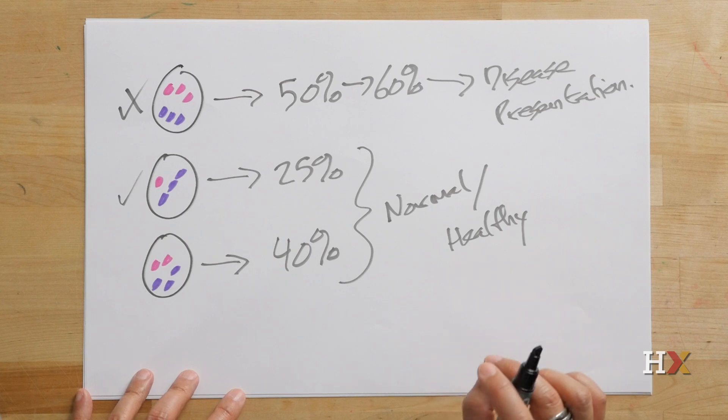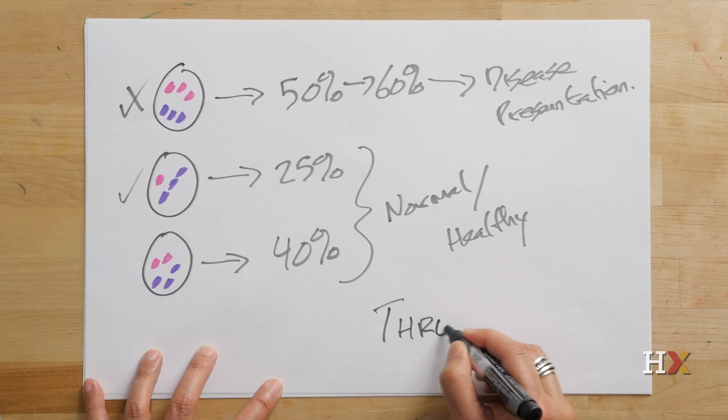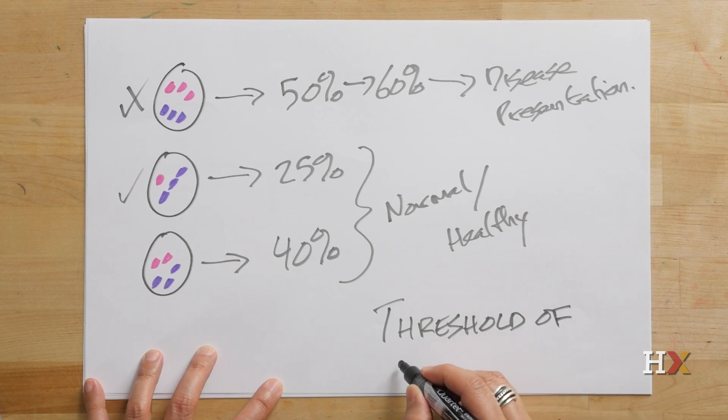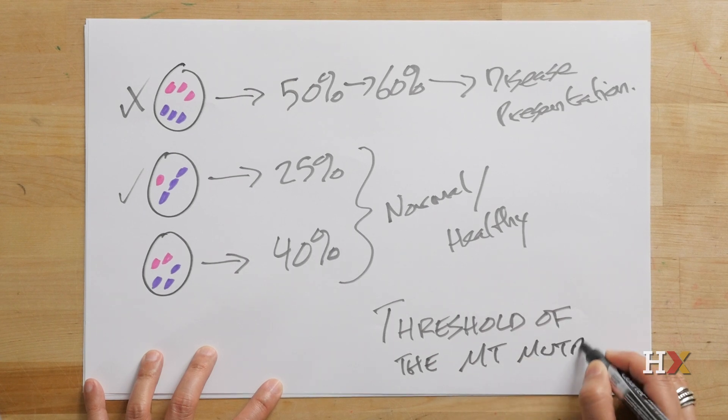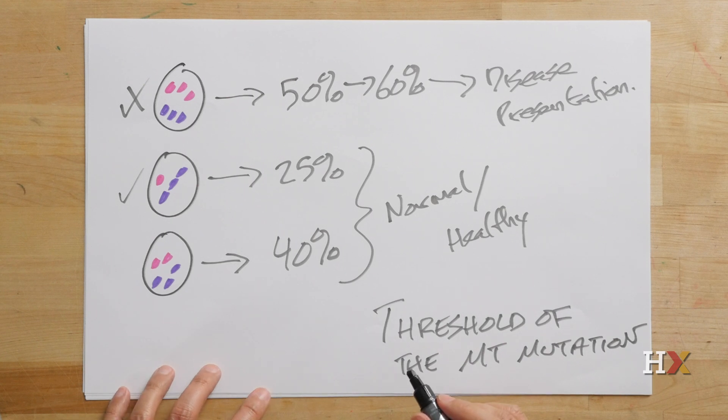And so this is one of the remarkable observations with mitochondrial disease is that even within the same family, even with siblings, you can see variations in whether or not the disease is seen, is presented or not. So that one way of thinking about it is that there is a threshold of the mitochondrial mutation that must be present for the disease to display itself.